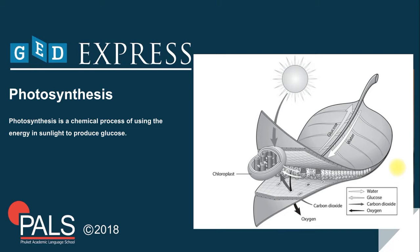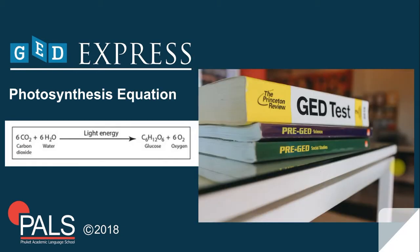Photosynthesis is a chemical process of using the energy in sunlight to produce glucose. I have here a diagram on the right side of the slide. It takes place in the cells of plants' leaves. Carbon dioxide enters cells through tiny holes in the leaves.